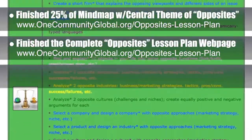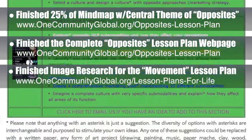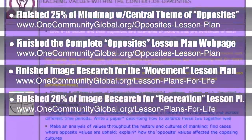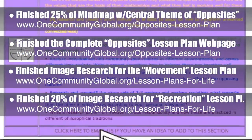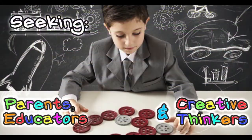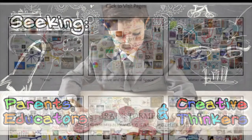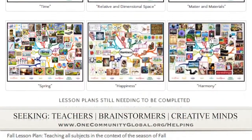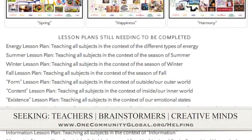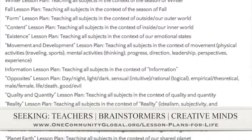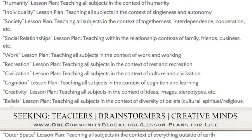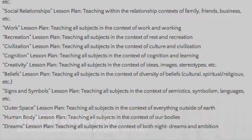This open source lesson page can be used immediately by anyone in any educational environment, working with any age or educational level, to teach any and all subjects within the context of Opposites. Behind the scenes, we also finished image research for the Lesson Plan with the Central Theme of Movement, and 20% of the Lesson Plan with the Central Theme of Recreation. We are seeking people to finish these lesson plans and contribute to our open source and free shared education program for all ages.